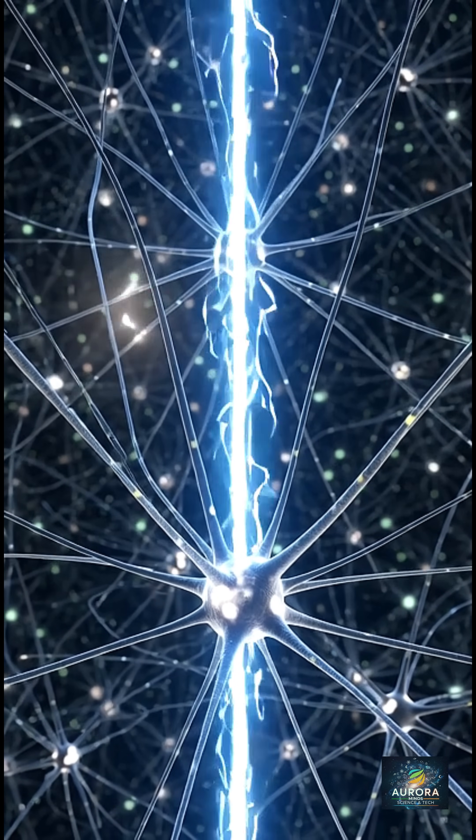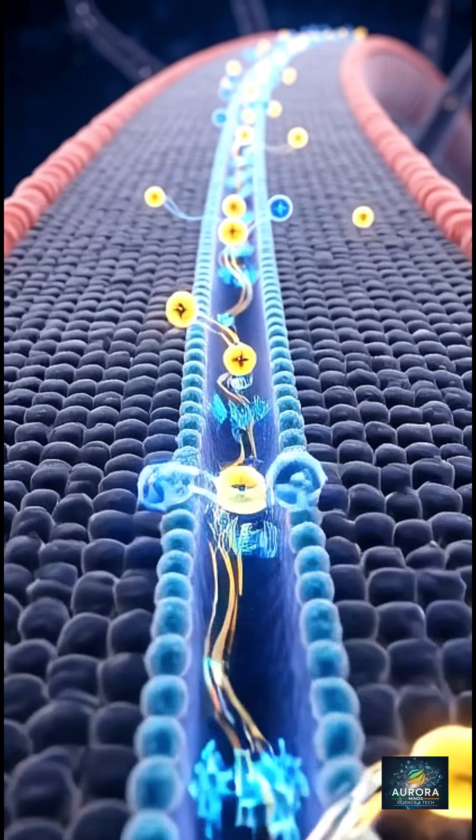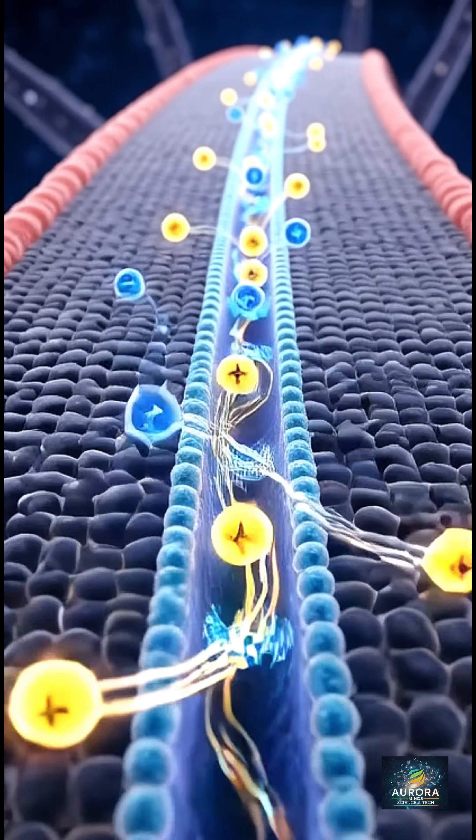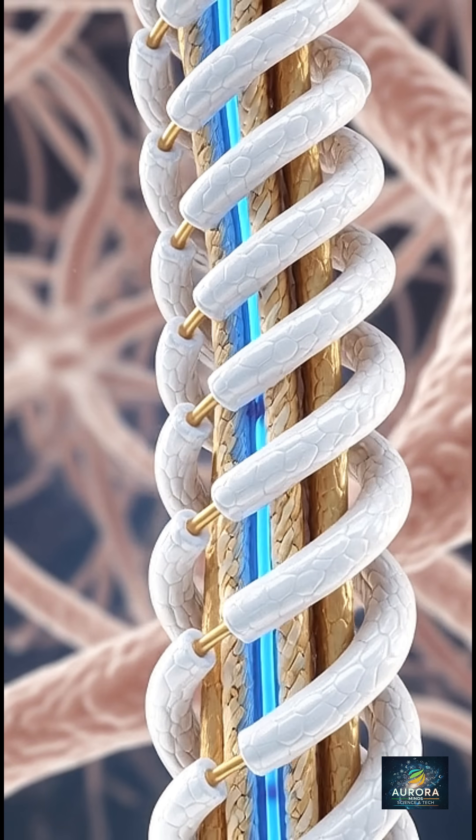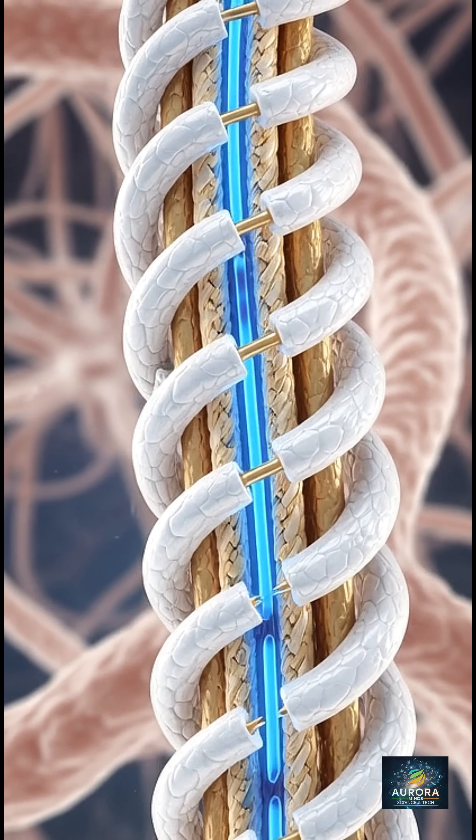How does it do this? Charged particles, or ions, temporarily flip the neuron's electrical charge. Myelin, a fatty super insulator like a super-fast internet cable, wraps the axon to speed up this signal.